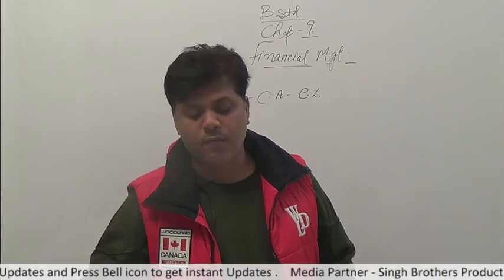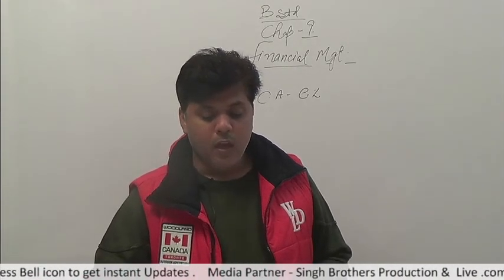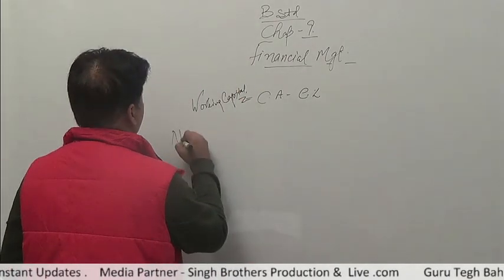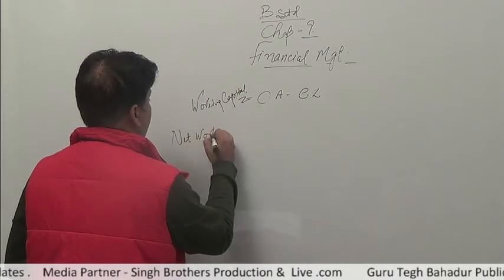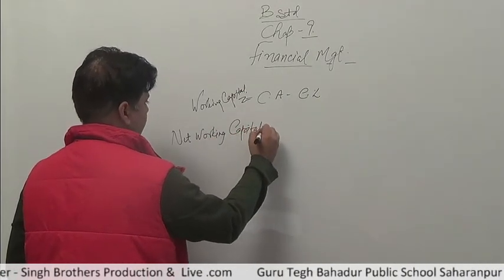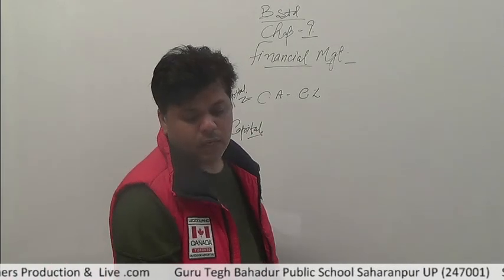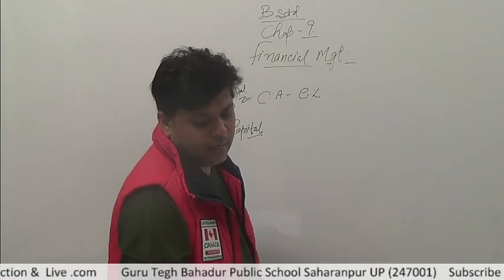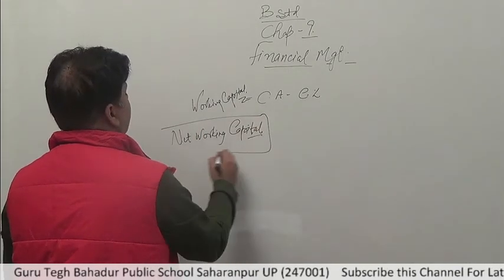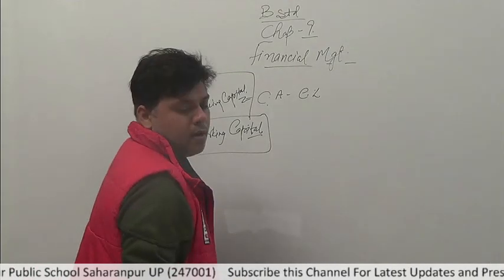Current liabilities are those which have to be paid within a year — bills payable, creditors, outstanding expenses, and advances received. Net working capital, which you have also studied in accountancy, is the difference between current assets and current liabilities — that is, current assets minus current liabilities.